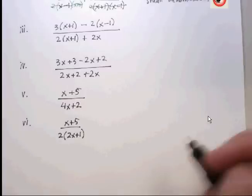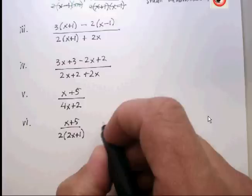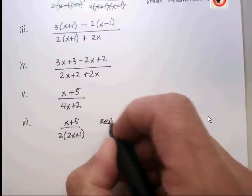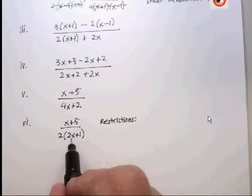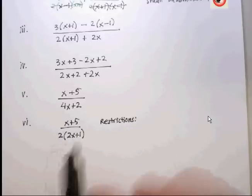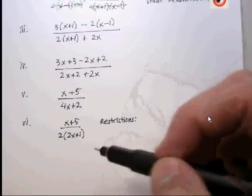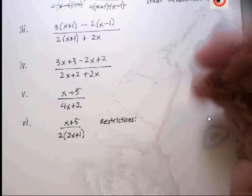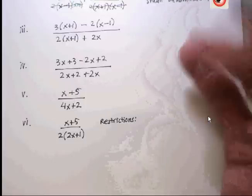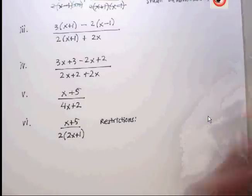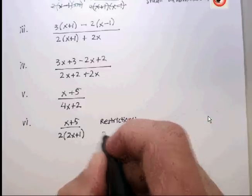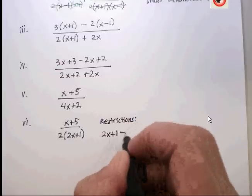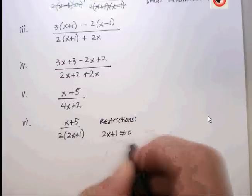Now there's one more thing I have to do with these: I have to find what are called restrictions. What are restrictions? Basically there are x's that will cause any denominator to equal 0, and you don't want that to happen because when you divide by 0 you're doing something called undefined - you're leading to an undefined answer. So let's look at this one first. What would cause this to be equal to 0? The way I figure that out is just say 2x plus 1 cannot equal 0, and then I just go ahead and solve this.